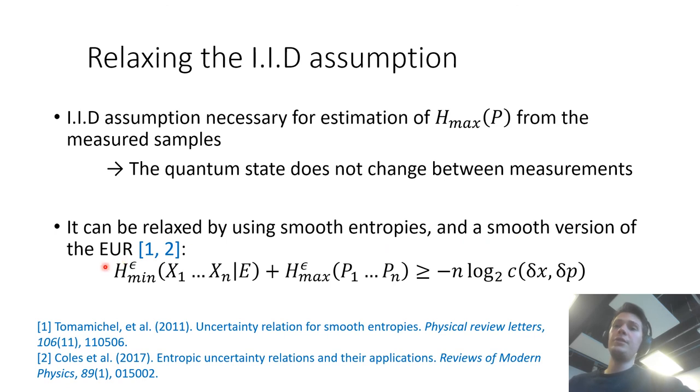But this assumption can be relaxed by using smooth entropy quantities and in particular there is a smooth version of the entropic uncertainty relations. And by using those smooth entropy quantities you can calculate in a similar way a bound on the smooth min entropy. And then this would relax the IID assumption.